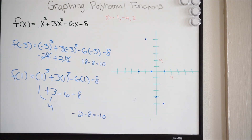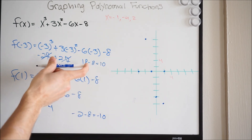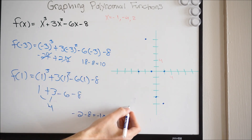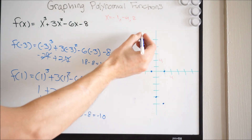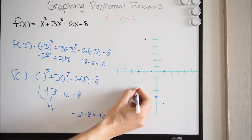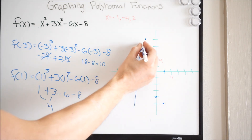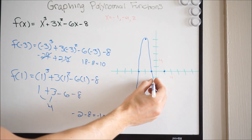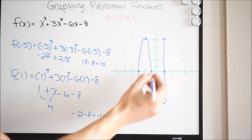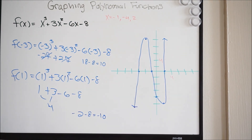We are pretty much done. We know what the end behavior looks like — as x approaches negative infinity, the function is also approaching negative infinity, so it's going down. We're starting down here, coming up, and then making our way back up. So we're going to have a function that looks something like this. And that is how you graph a polynomial function by hand.